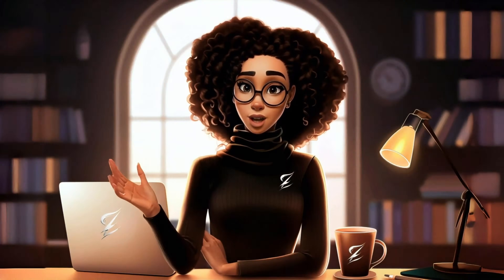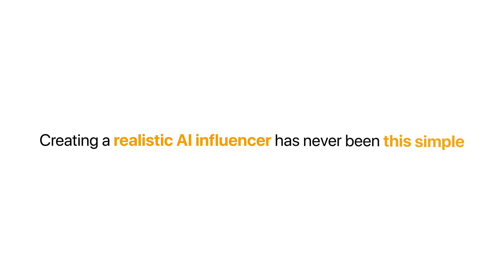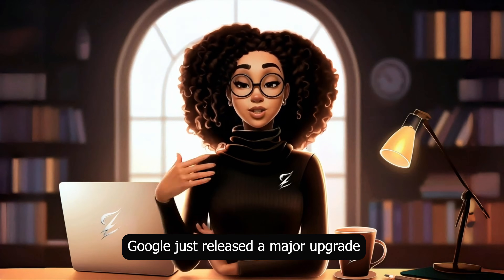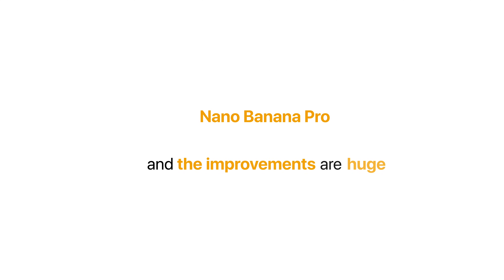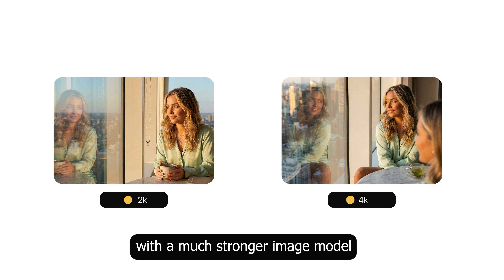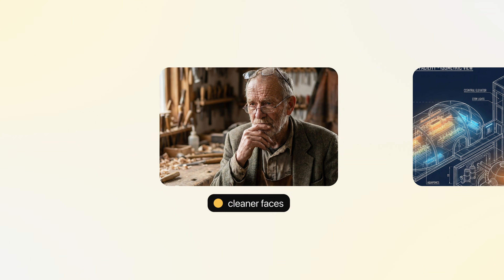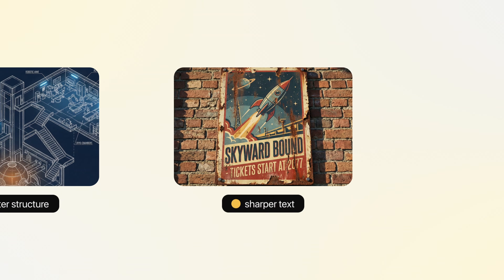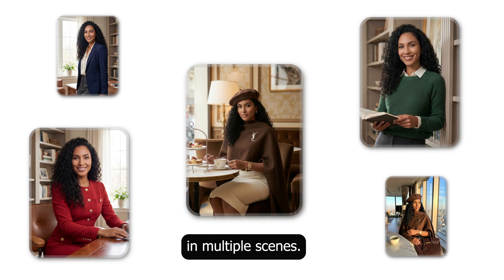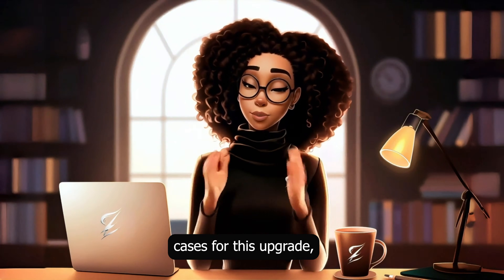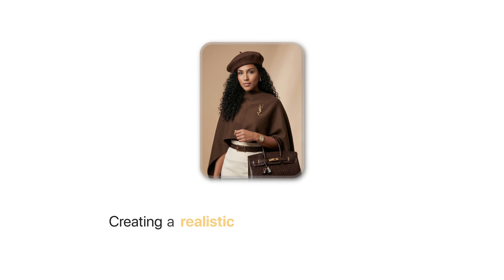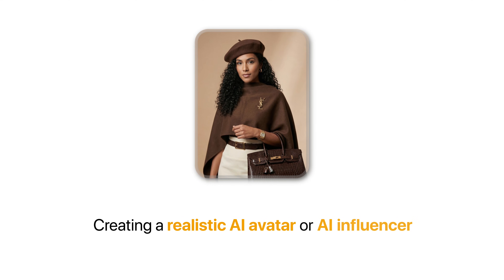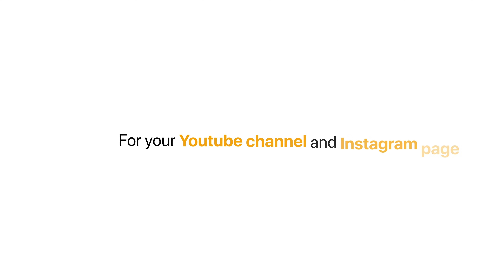But there's good news. Creating a realistic AI influencer has never been this simple. Google just released a major upgrade to Nano Banana, now called Nano Banana Pro, and the improvements are huge. You can now generate images in 2K and 4K quality with a much stronger image model that gives you cleaner faces, better structure, sharper text, and extremely consistent characters in multiple scenes. There are so many use cases for this upgrade, but in this video we're starting with one of the most powerful ones: creating a realistic AI avatar or AI influencer for your YouTube channel or Instagram page.